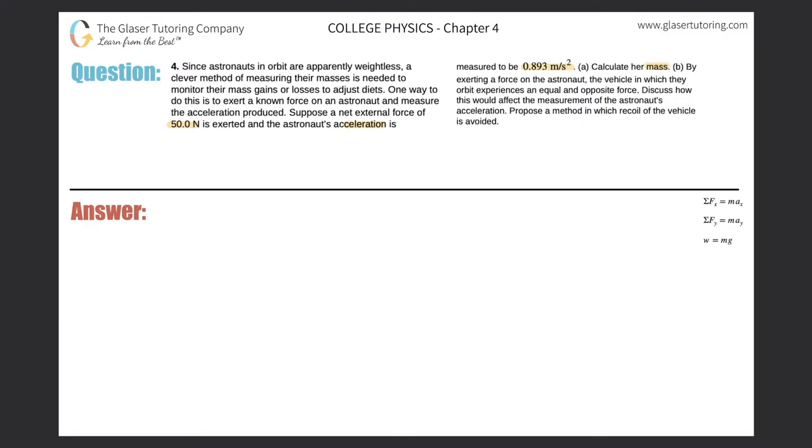Okay, so for letter A, we know simply that the force, the net external force on this astronaut, so let's call it a force in the x direction, that is equal to 50 newtons. We also know that her acceleration, she must also experience that acceleration in the x direction, should be 0.893 meters per second squared, and we're trying to calculate now the mass.